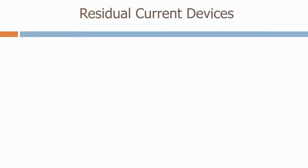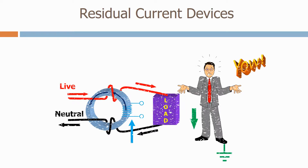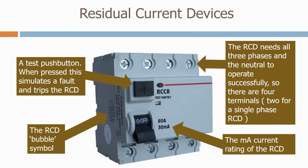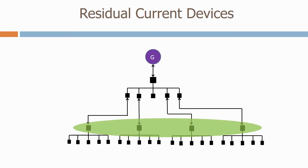In the next section, we look at residual current devices, which are one of the key safety features of a site distribution system. We start by going back to first principles, looking at how a residual current device or RCD operates. We then look at how an RCD is constructed and how it deals with a fault. Next, we look at the key features of an RCD, and finally, we look at the key things you need to consider when positioning an RCD in the distribution network.